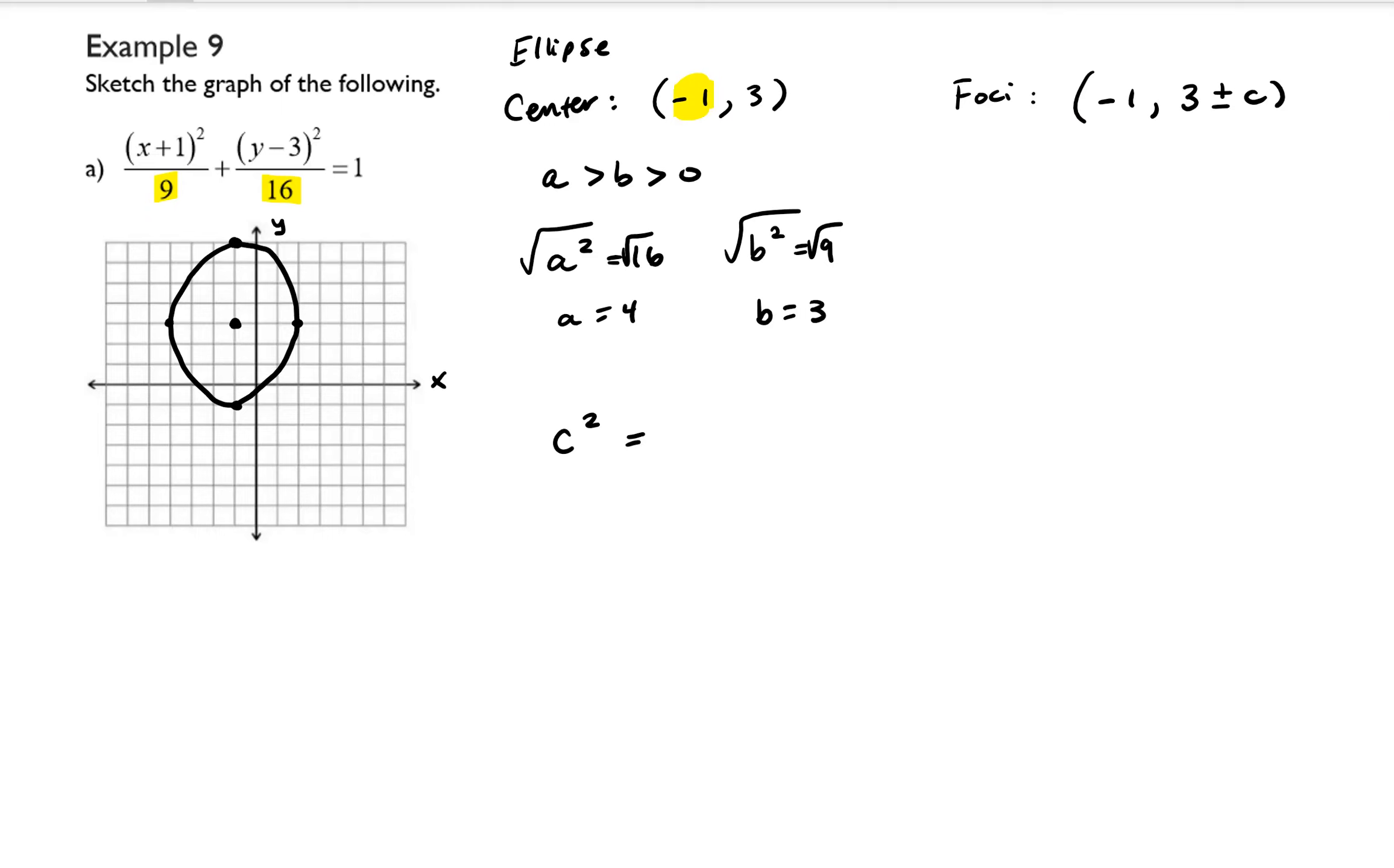So we need to figure out c, and the equation that we use to figure out c is c² = a² - b². And that's going to be 16 - 9. So c² = 7. And if we take the square root of both sides, we end up getting c = √7. So that means that our foci are located at (-1, 3 ± √7).